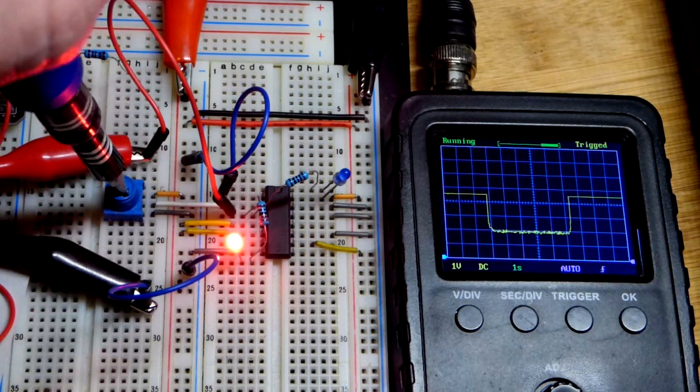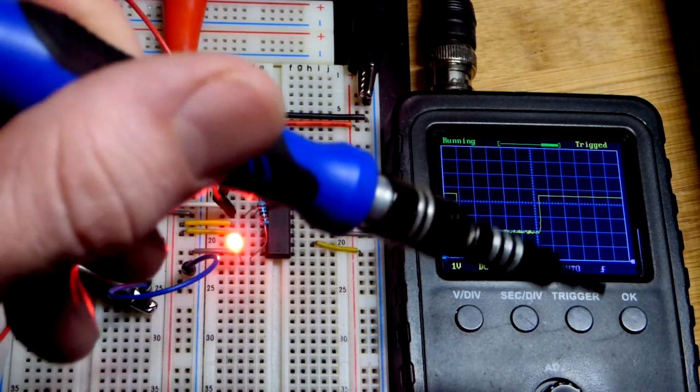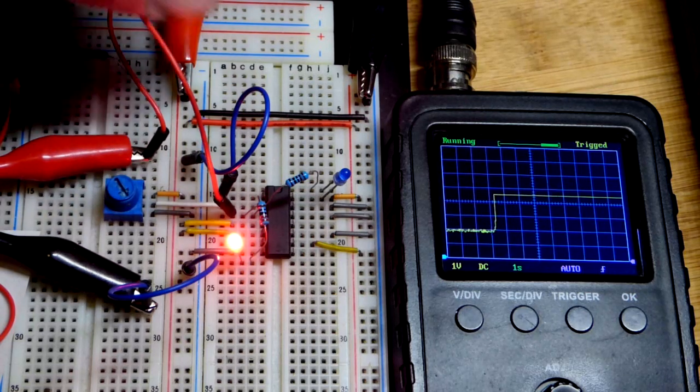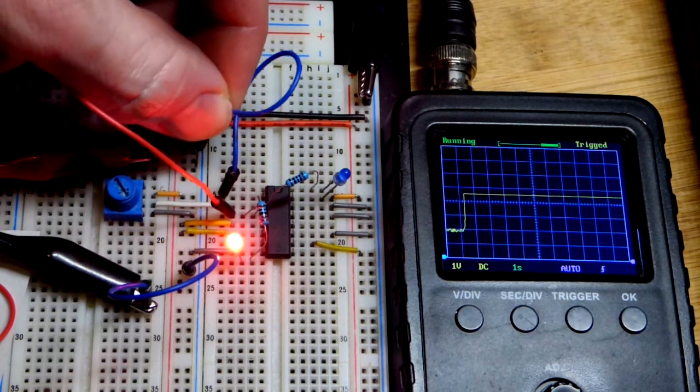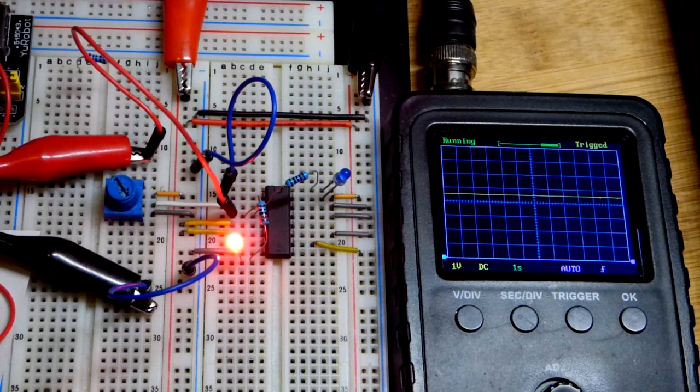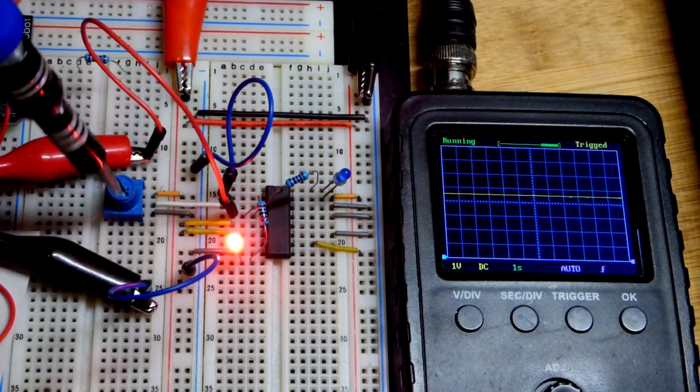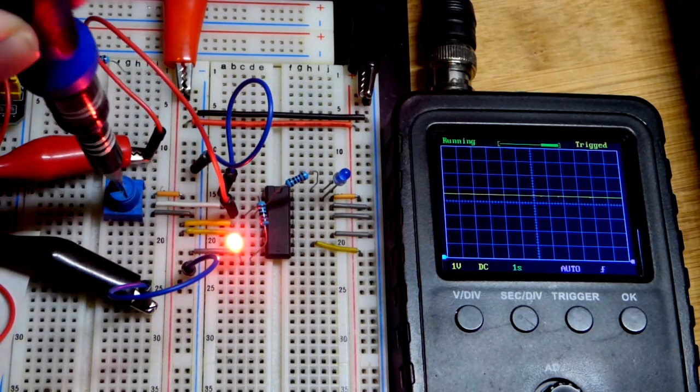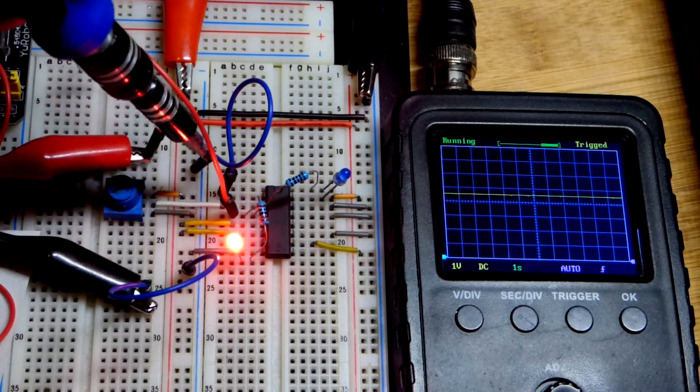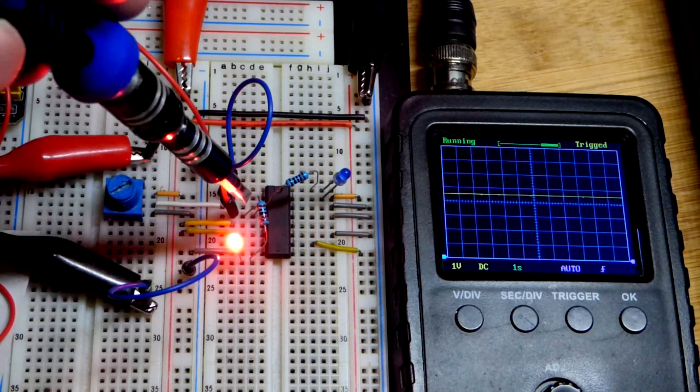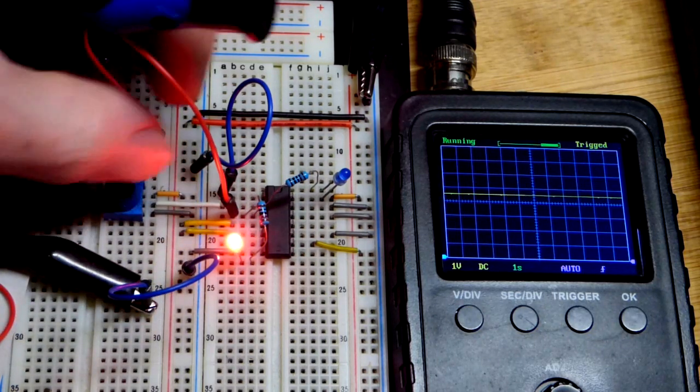We're less than halfway and we got one low input and a high output. As I said before, it could be one or the other or both. The only condition where we have a low output is if both inputs are high, so we got one low, so the output's gonna be high. We need them both high.